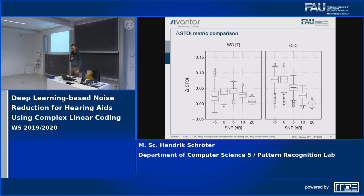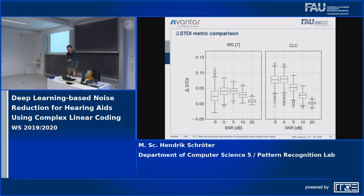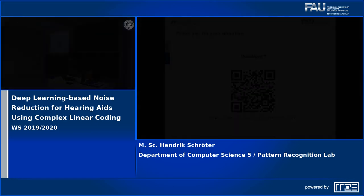We can also see this looking at some metrics. Especially for very noisy conditions with an SNR of minus 5 or 0, CLC outperforms previous work by a large amount. For conditions that are not so noisy, the Wiener gain method also works quite well. This concludes my talk — thank you very much.